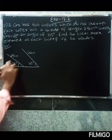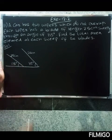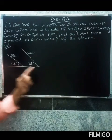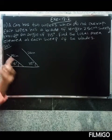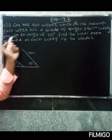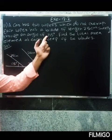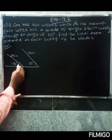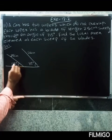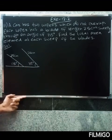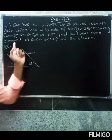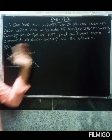Each wiper has a blade of length 25 cm, sweeping through an angle of 115 degrees. Find the total area cleaned at each sweep of the blade.